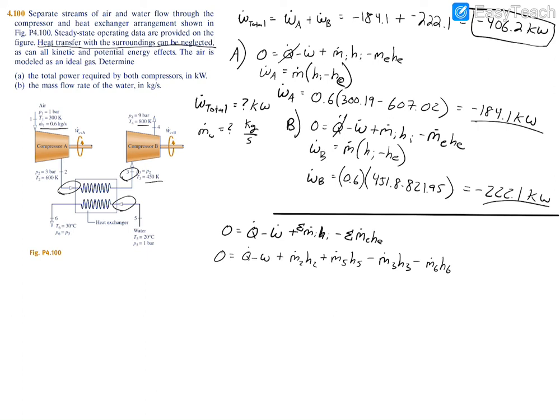There is no heat transfer with the surroundings and no shaft work in the heat exchanger, so both Q and W drop out. We can then solve for m_dot_5, since m_dot_5 equals m_dot_6. Rearranging gives: m_dot_5 equals m_dot_2 times (h3 minus h2) divided by (h5 minus h6).